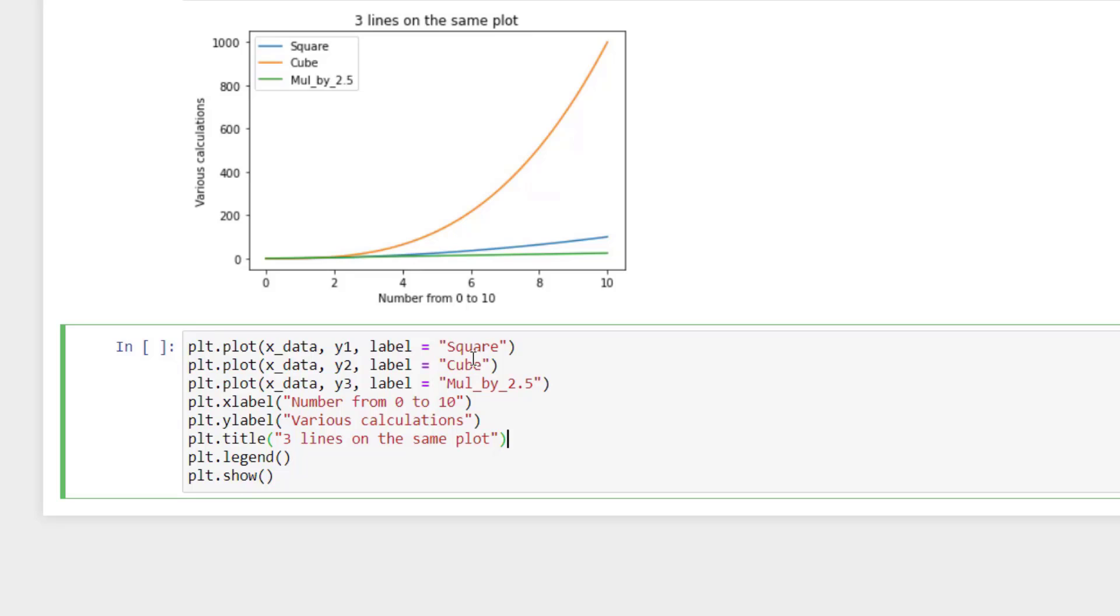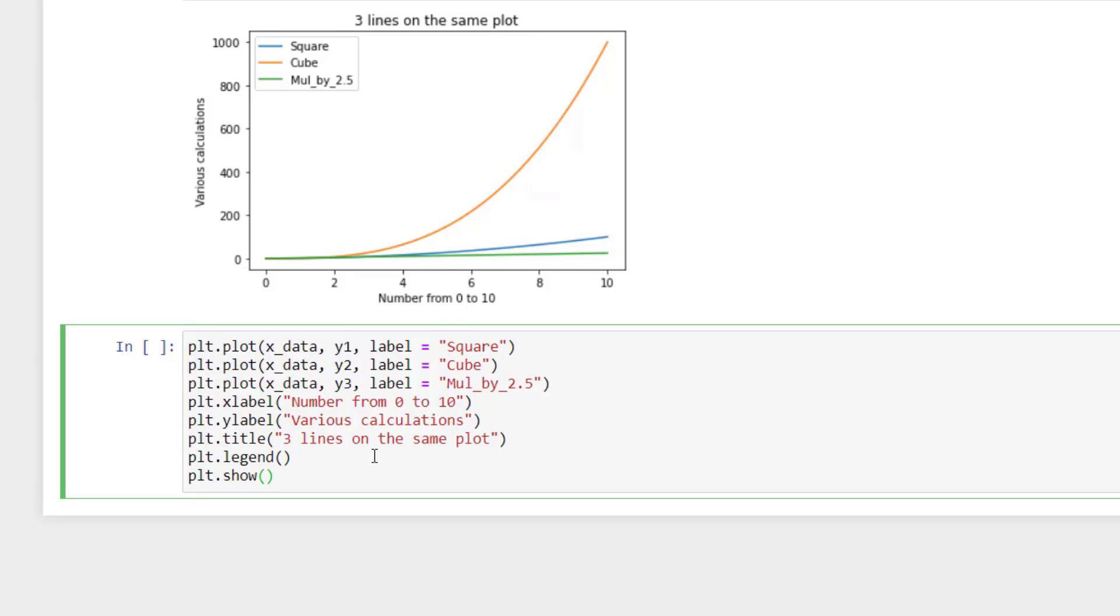Now this ensures that the data is correctly labeled, say like for example, now legend cannot be misinterpreted. This label is for this particular square and it is bounded, it cannot change throughout the program. So after specifying the label, call this function plt.legend and then plt.show. So now we are good to go. The same result will be there, you can verify, we will just hit enter, shift enter and see.